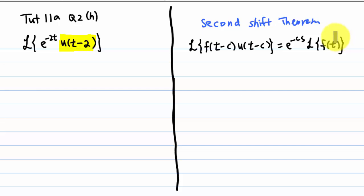Which says that Laplace transform of f times the unit step function u of t minus c is equal to e to the minus cs times Laplace transform of f of t.